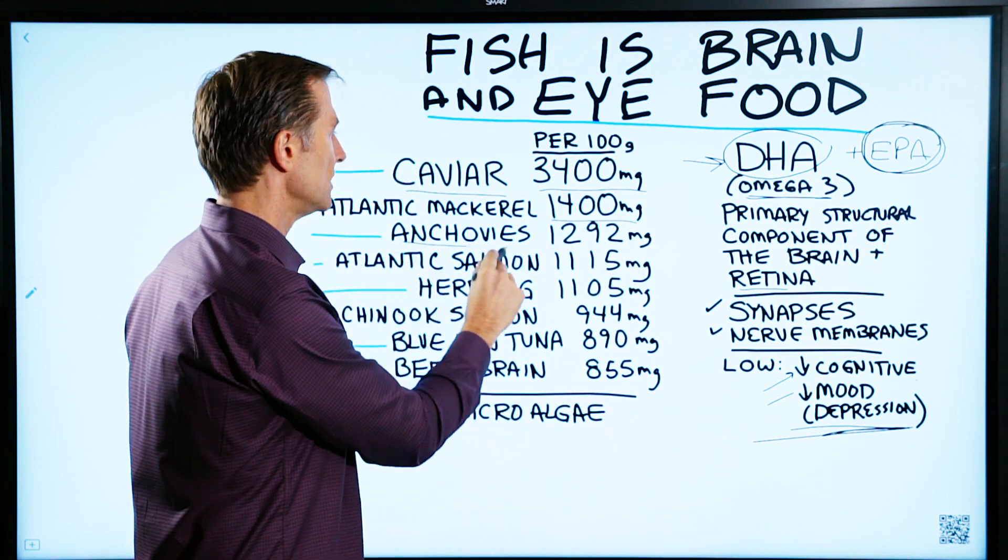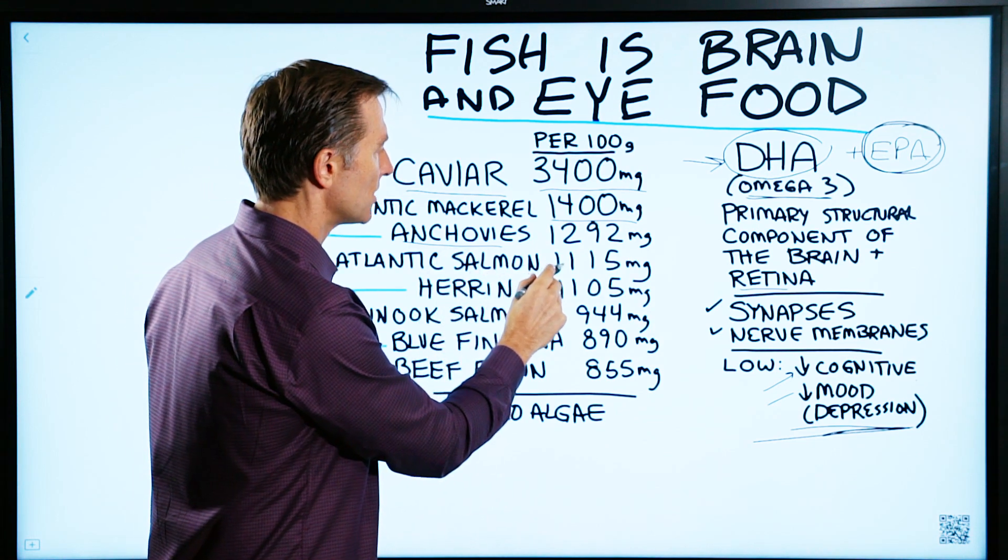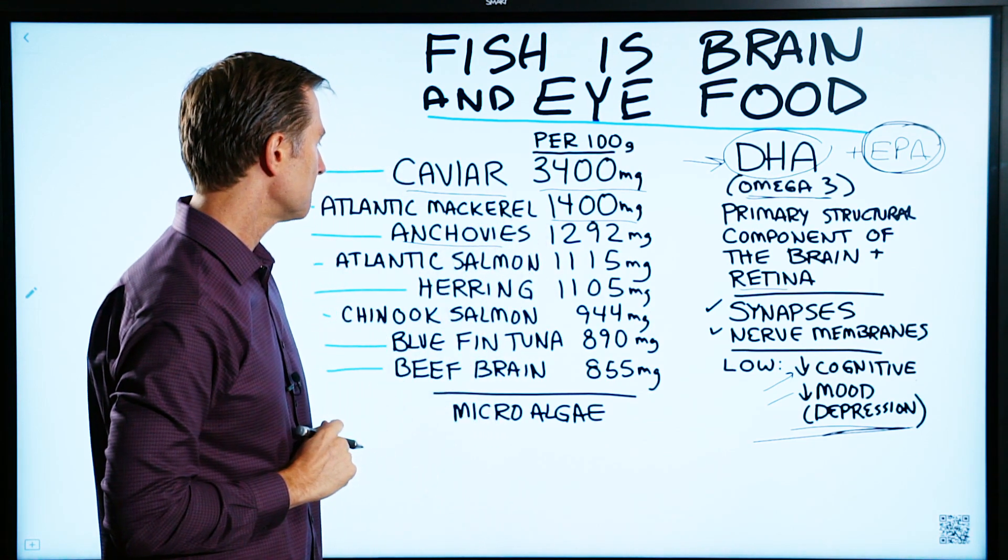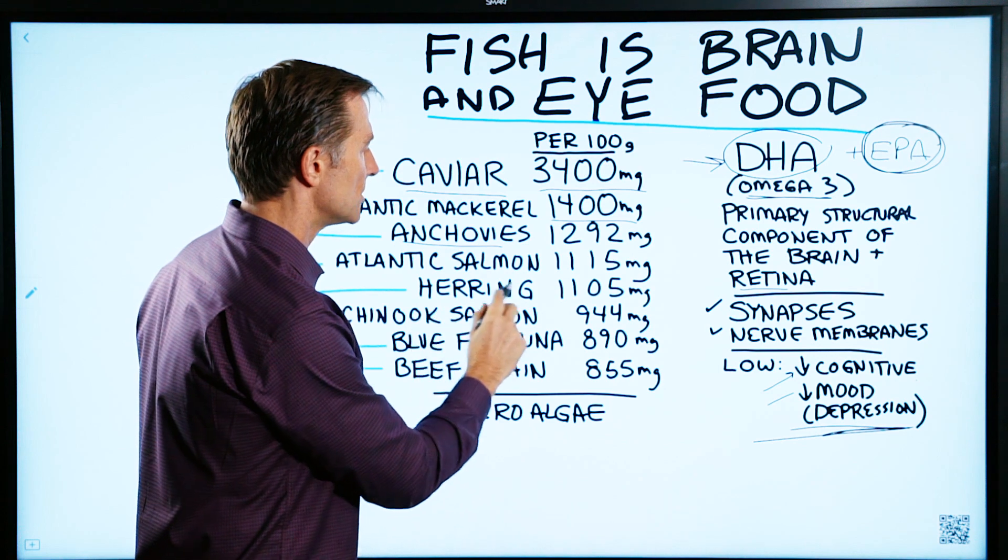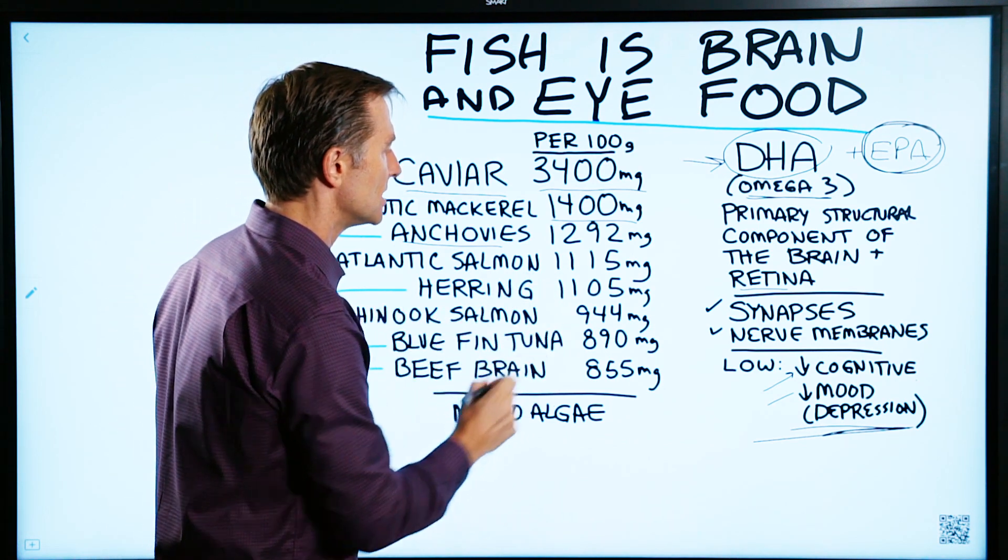Then we have anchovies, 1,292. And then Atlantic salmon, 1,115 milligrams. Then we have herring, which is about 1,105. Chinook salmon, 944.